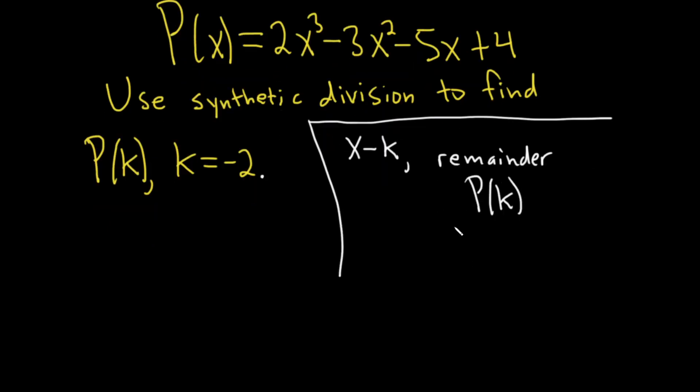So let's use synthetic division. First you take the number k and put it here, so negative 2. Then you take these numbers here - these are called the coefficients.